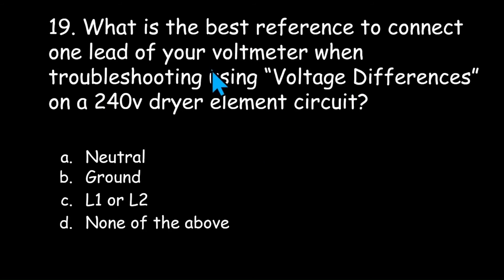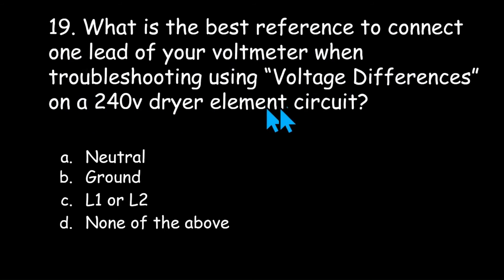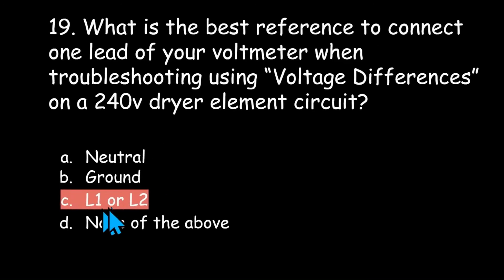Number 19: what is the best reference point to connect one lead of your voltmeter when troubleshooting using voltage differences on a 240 volt dryer element circuit? Neutral, ground, L1 or L2, or none of the above? It's going to be L1 or L2 because neutral and ground are not part of the 240 volt dryer element circuit.